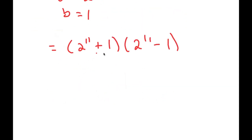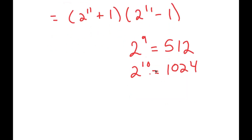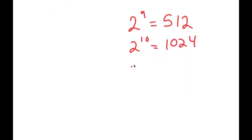What is 2 to the power of 11? Well, 2 to the power of 9 is 512. 2 to the power of 10 is double of 2 to the power of 9, which is double of 512, which is 1024. So 2 to the power of 11 is double of 1024, which is 2048.